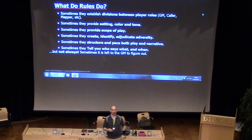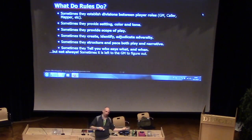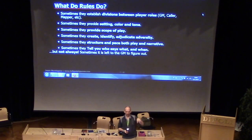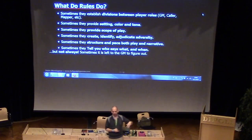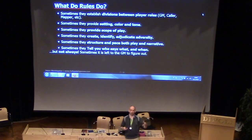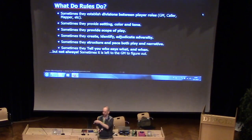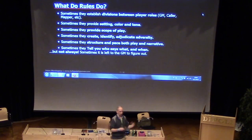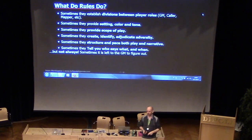Rules can also provide setting, color, or tone. They can provide scope of play — 'we're all vampires, and no werewolves in our vampire game.' Sometimes they handle adversity: who gets to decide when there's a challenge, and how that challenge is resolved? As the game master, I invented the orcs that are going to ambush you, I identify when that ambush takes place, and I tell you what you need to do to avoid it. Rules also structure and pace gameplay and the emerging narrative — but quite often they don't tell you who gets to say what and when, which is a really important piece.